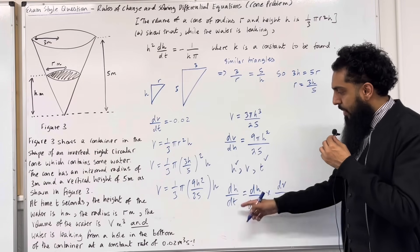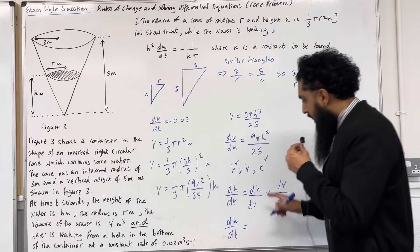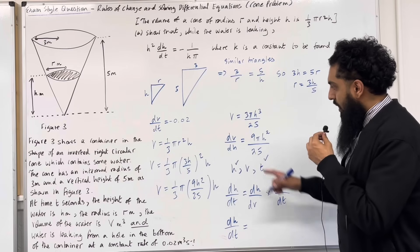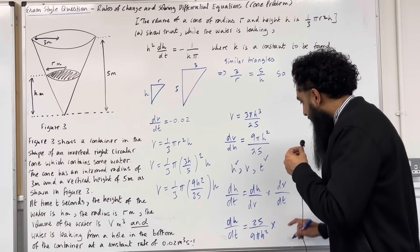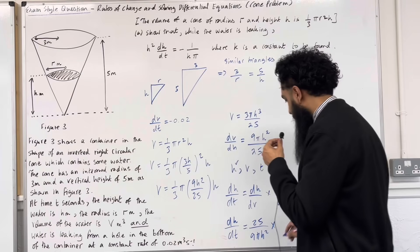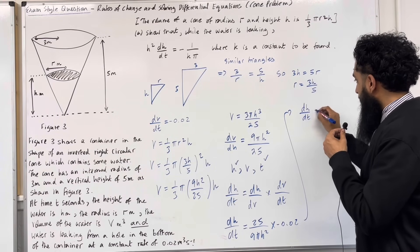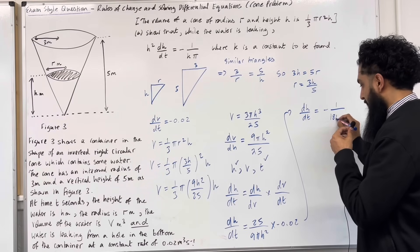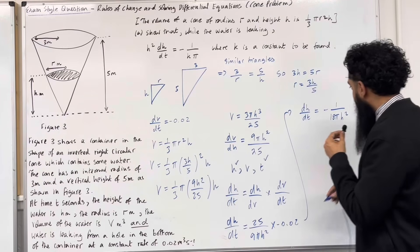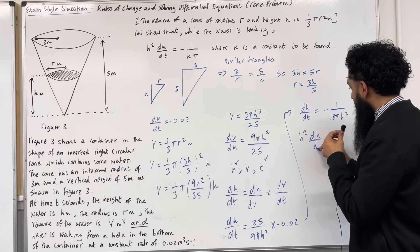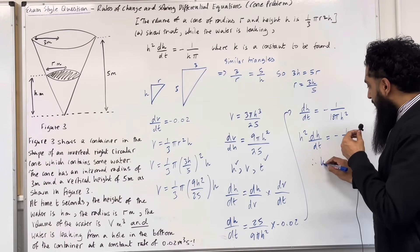Carrying out the substitution: dh/dt = dh/dV × dV/dt. Since dh/dV is the reciprocal of dV/dh, it equals 25 over 9πh². Multiplying by dV/dt = −0.02 gives dh/dt = −1 over 18πh². Multiplying both sides by h² gives h² dh/dt = −1 over 18π, as required. Therefore the constant k is equal to 18.